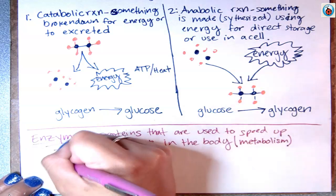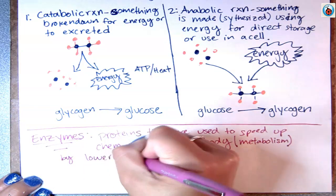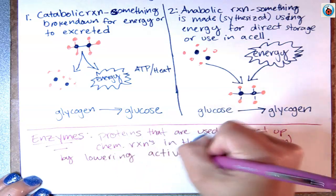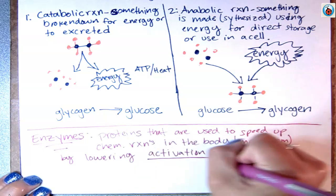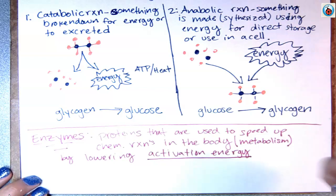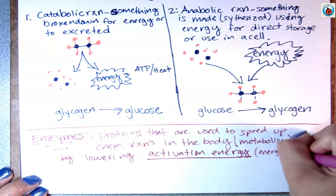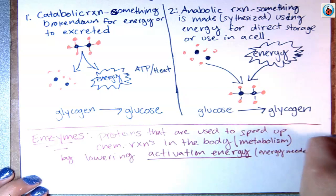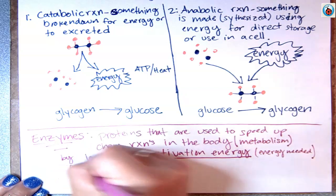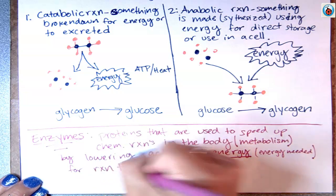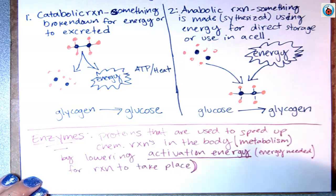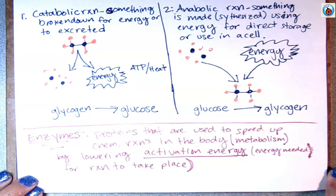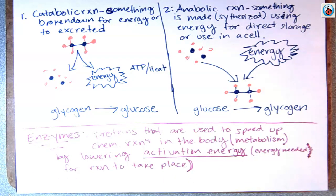Enzymes do this by lowering activation energy — that is, they decrease the amount of energy you need for something to happen. Activation energy is the energy needed for a reaction to take place, and that is the role of the enzyme.